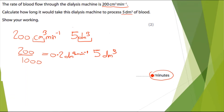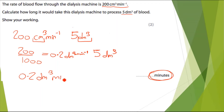Now I have both volumes in decimetres cubed. Looking at the units for my final answer, I can see that they are minutes — we don't have decimetres cubed in them. So I need to somehow get rid of my decimetres cubed, and the only way I can do that is by dividing one number by the other. So I could either do 0.2 divided by 5, or 5 divided by 0.2. For example, if I had 0.2 decimetres cubed minute to the power of minus 1, and I divided that by 5 decimetres cubed, the units would cancel out.